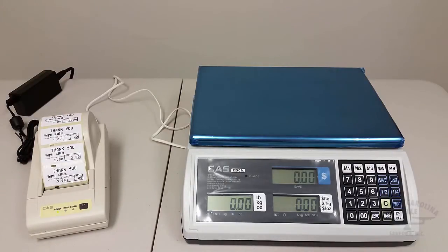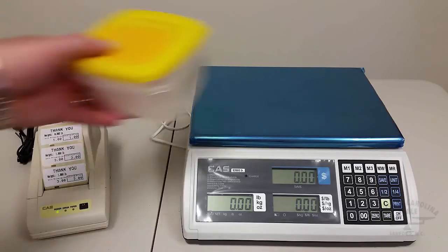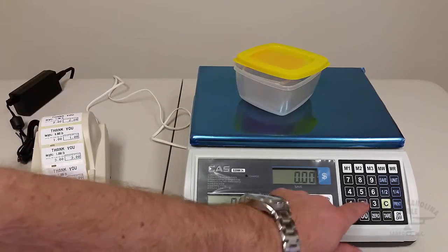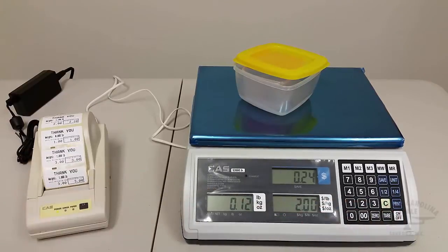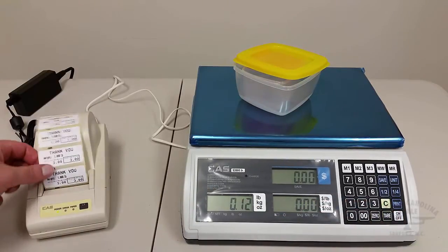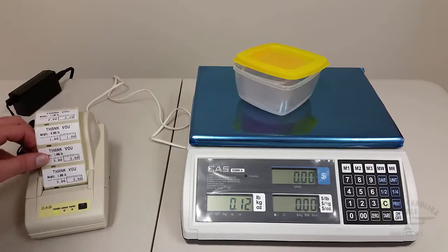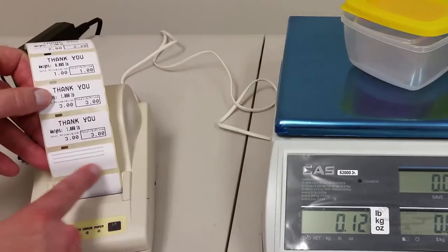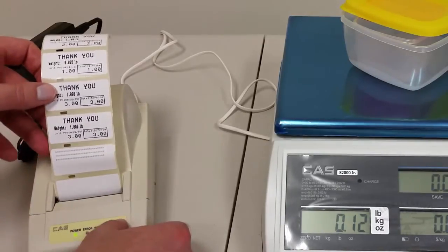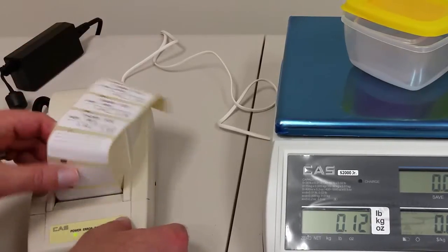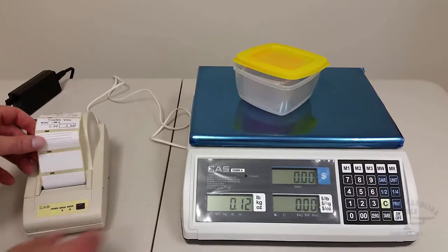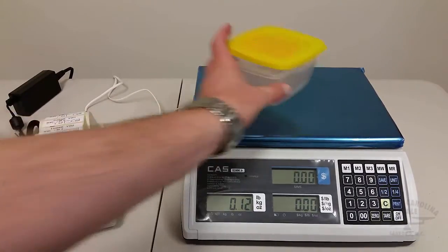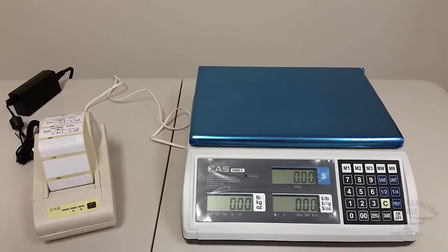you'll see that it printed just lines across. So that means that we need to make one setting change in the scale so that it will communicate correctly with the DLP50 label printer.